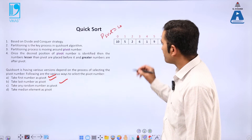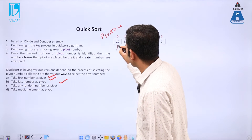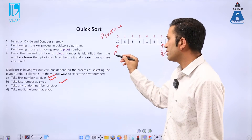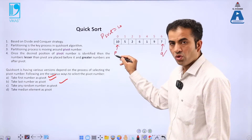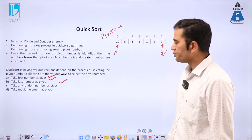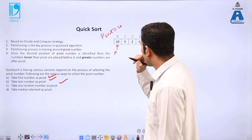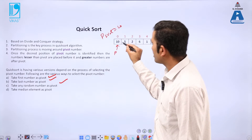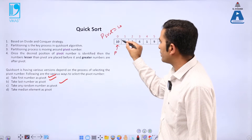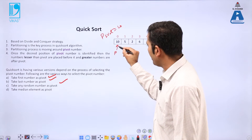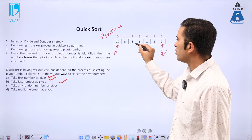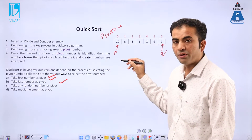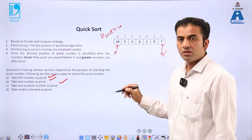For that, let us use two pointers — p (start/low) and q (end/high). We check: if the pivot point is less than or equal to the value at that index, then we increment p by 1. The p pointer will stop when it encounters a number greater than the pivot point.